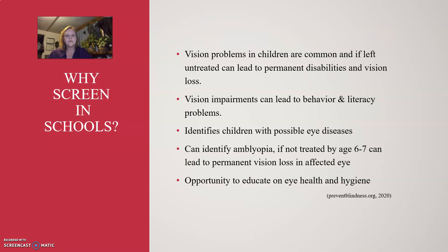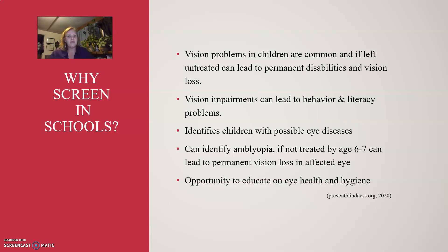So why do we screen in schools? Vision problems in children are common and if left untreated can lead to permanent disabilities and vision loss. Vision impairments can lead to behavior and literacy problems. Screening identifies children with possible eye diseases and can identify amblyopia, which if not treated by ages 6 or 7 can result in permanent vision loss in the affected eye. It's also an opportunity to educate children on eye health and hygiene.